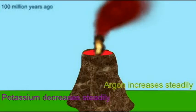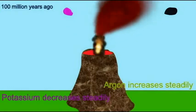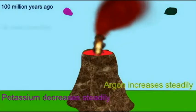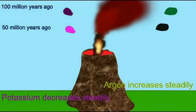Because the rate of decrease of radioactive potassium is steady, and because the rate of increase of argon is steady in these volcanic rocks, the potassium-argon dating technique can be used to date these rocks.